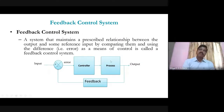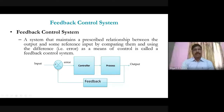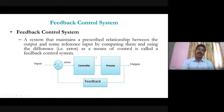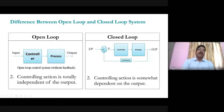A feedback control system is a system that maintains a prescribed relation between the output and some reference input by comparing them and using the difference — the error. The comparator measures the reference input and the actual output; the actual output is subtracted from the reference, and the error is given as input to the controller. The controller takes action according to the magnitude of the error, gives its output to the plant, and you get the desired controlled output. This is called a feedback control system, also known as a closed-loop control system.